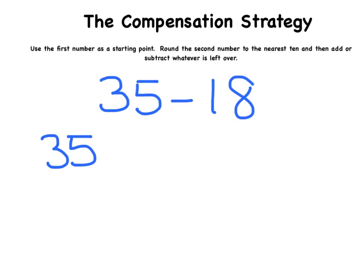The next thing I'm going to do is to take my second number and I'm going to round it to the nearest 10. So to be able to use this strategy you need to be able to know how to round to the nearest 10. 18 rounded to the nearest 10 is 20.